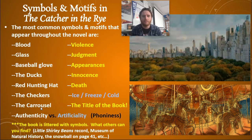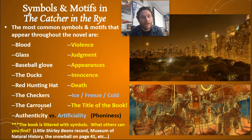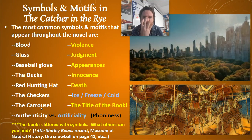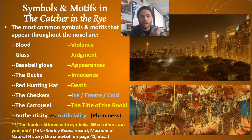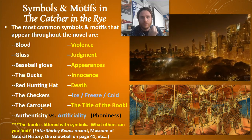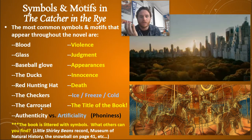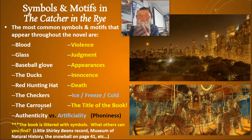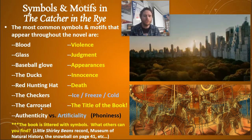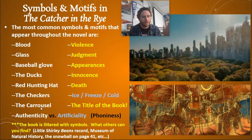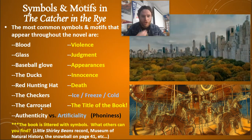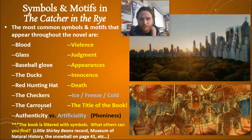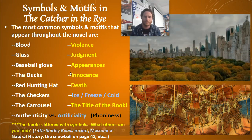And then more abstract motifs you'll see like violence, judgment, appearances, innocence, death, ice, freezing, cold, and the title of the book. The book is littered with symbols. What others could you find? The Little Shirley Beans record, the Museum of Natural History, the snowball on page 41. Keep reading and think about these.